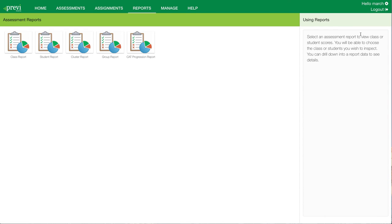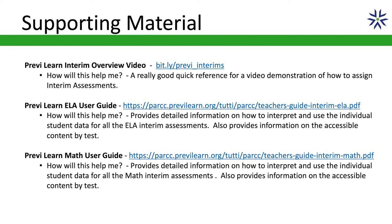Going back to the reports tab, here's a summary to review. We had the class reports, student report, cluster report, and the group report that are available for the interim assessments. The CAP regression report is not available for interim assessments, as interims are fixed form exams. If you have additional questions or would like more information, here are a few resources available covering the interim math and ELA assessments. You can also contact PreviLearn support if you need additional assistance with the interim reporting functionality available for coordinators. Thank you.